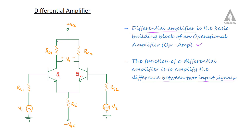We have common emitter circuits with two transistors Q1 and Q2. These transistors have identical characteristics. We have two collector resistances: RC1 is connected to Q1 and RC2 is connected to Q2. Both resistors are connected to the biasing voltage plus VCC.